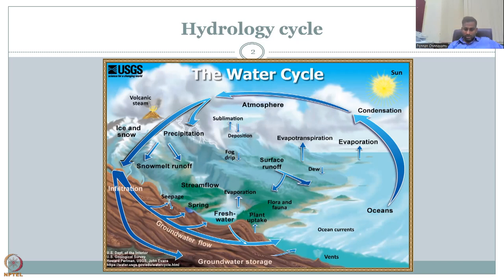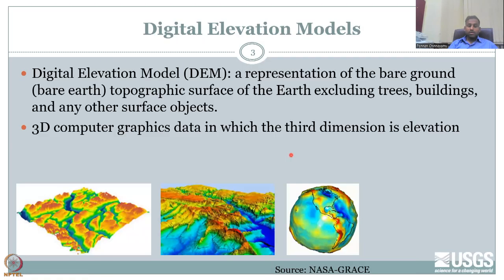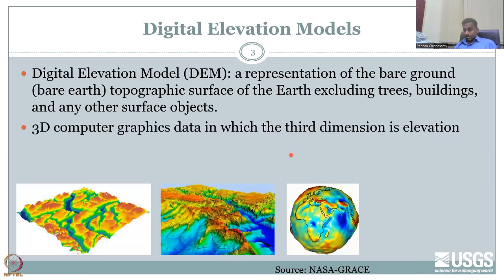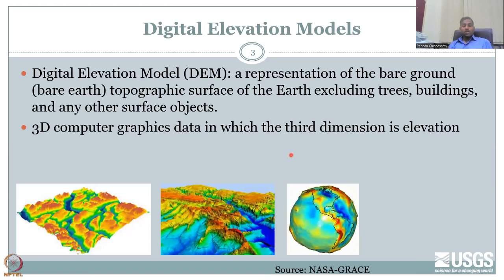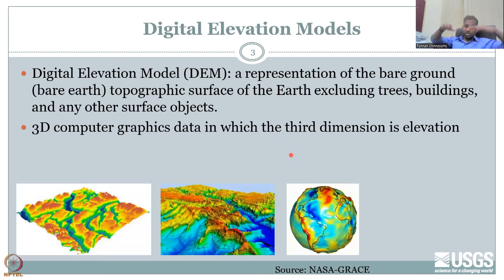If you have the terrain accurately assessed, you can know how water moves and then take a lot of management practices into action. For that, we need an elevation model — how is the land distributed in elevation? These are called Digital Elevation Models. It's a model because, like a globe is a model of the earth, a 3D map is a model of the earth; the digital elevation model is the model of elevation changes.